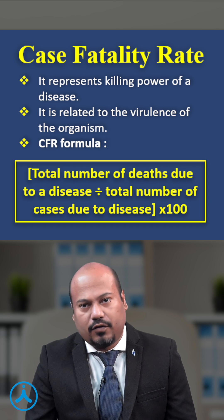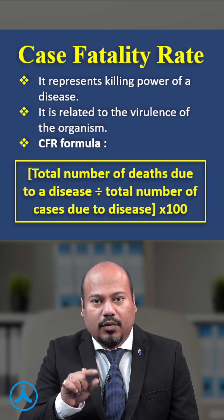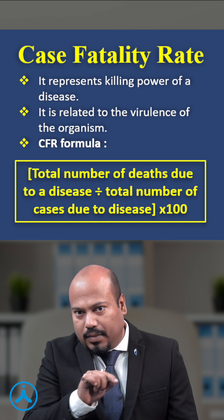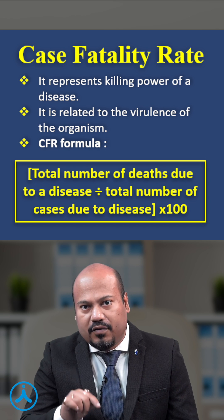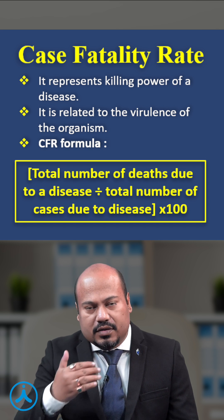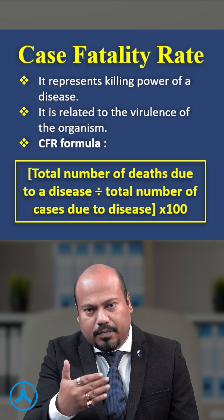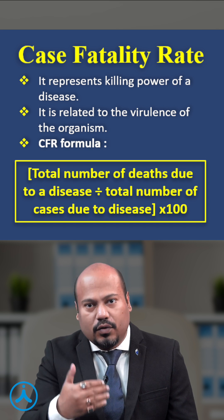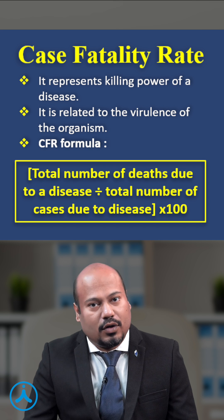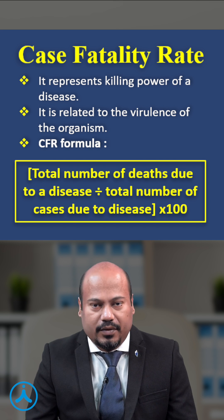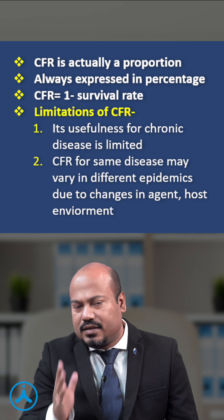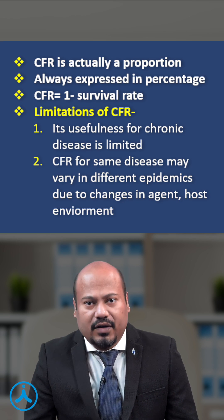So what will be the formula of CFR? It is the number of deaths due to the disease divided by the number of cases of the disease, multiplied by 100. Because the numerator is a part of the denominator, CFR is a proportion, not a rate. Also, case fatality rate is 1 minus the survival rate.